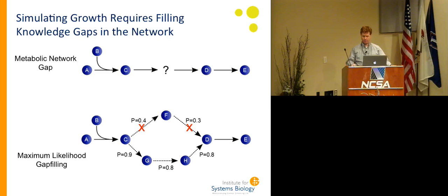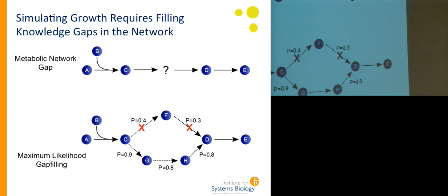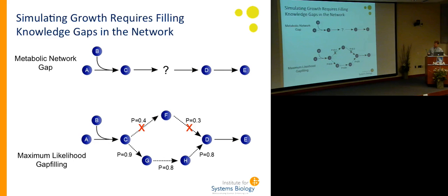Most gap filling done at present uses parsimony — a principle I generally agree with — but in essence this is just filling in the shortest number of reactions needed to make something functional. What we've done instead with maximum likelihood gap filling is postulate with an algorithm a whole host of different possible connections, and then using evidence from the genome — and also metabolomics if it's available — we get an evidence score. So you may have a longer pathway that fills in, but you end up with stronger evidence scores, and in fact that's what fills in. This is a way to make reconstructions capable of sustaining a model while filling in with as much evidence as possible.